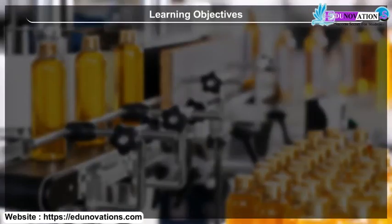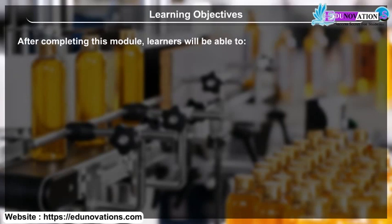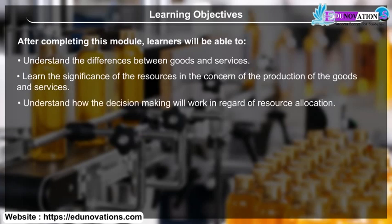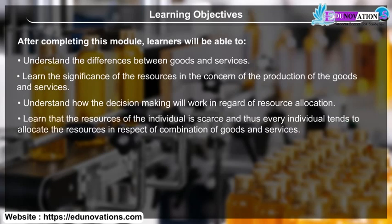Learning Objectives. After completing this module, learners will be able to: understand the differences between goods and services; learn the significance of the resources in the concern of the production of goods and services; understand how decision-making will work in regard to resource allocation; and learn that the resources of the individual are scarce.